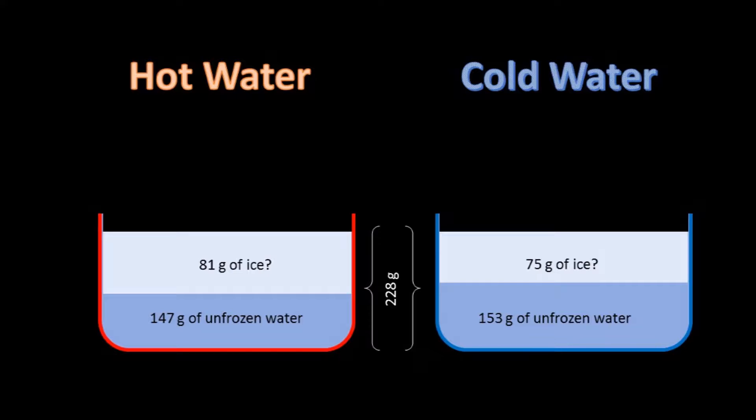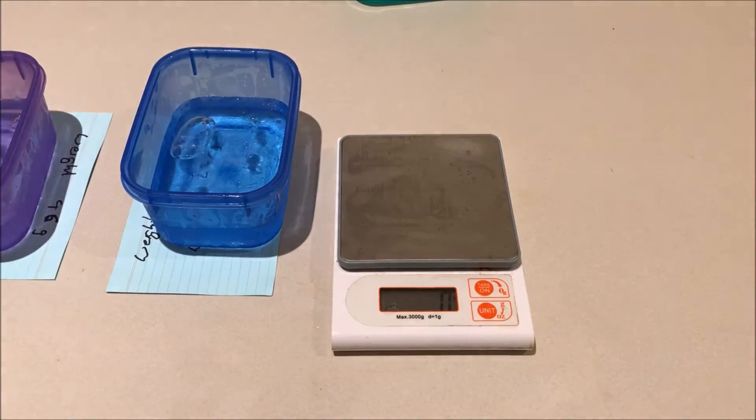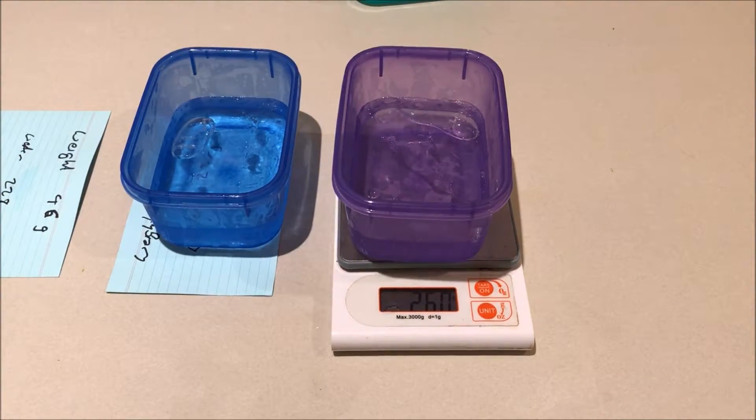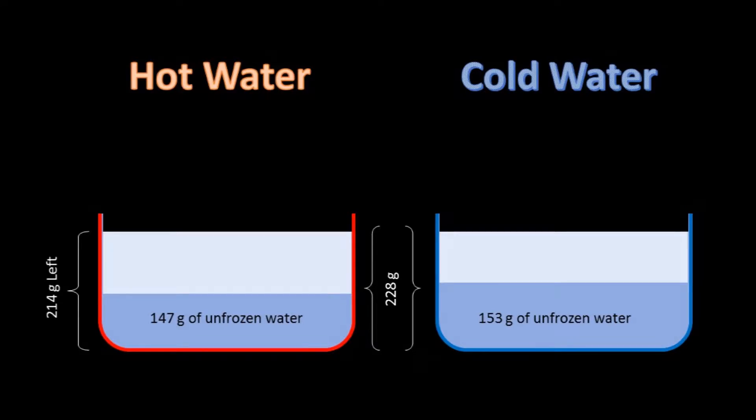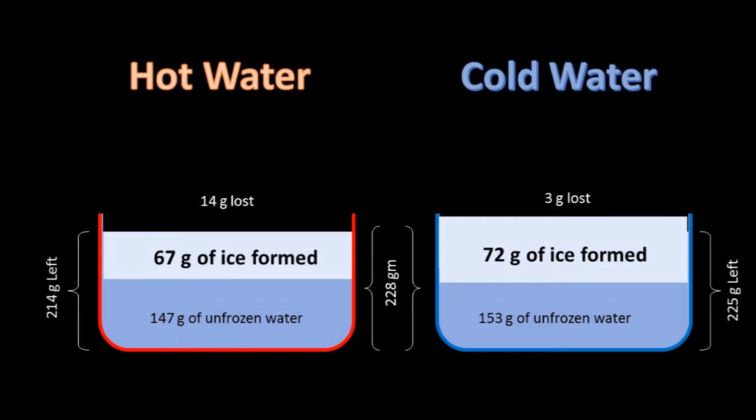But let's add the water back and measure the total. Taking away the weight of the containers, we see now that the total amount of the contents is 214 grams in the hot and 225 in the cold. So over the course of the freezing, the cold container lost 3 grams but the hot container lost 14. So the amount of ice that was actually formed was 67 grams in the hot container and 72 grams in the cold. But how on earth did that happen?